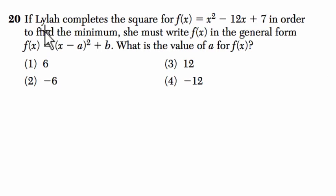Okay, so let's read the problem first. We'll explain what this problem is saying in general, and then we'll talk about some specific strategies. If Lila completes the square for f of x, right here, f of x equals x squared minus 12x plus 7,